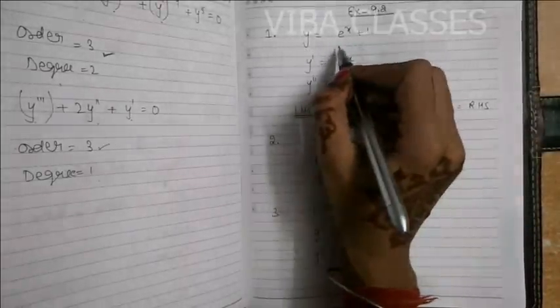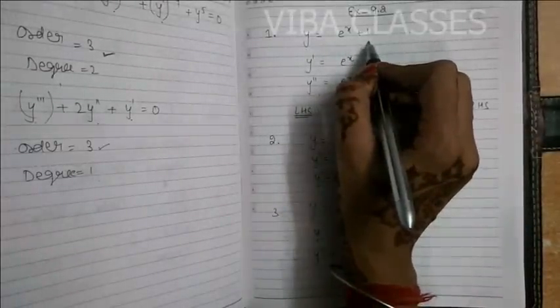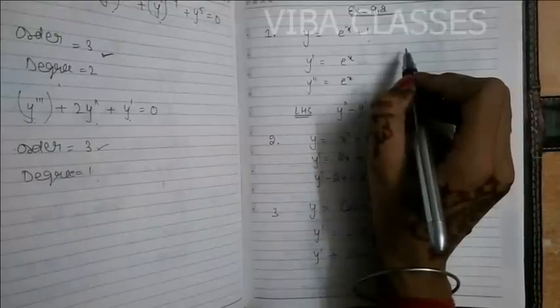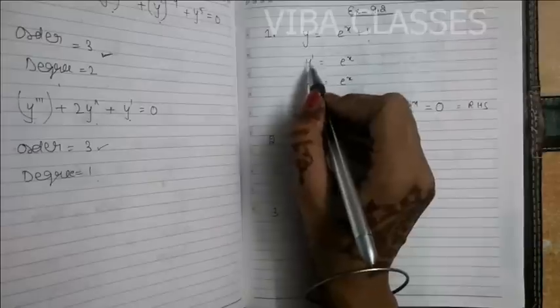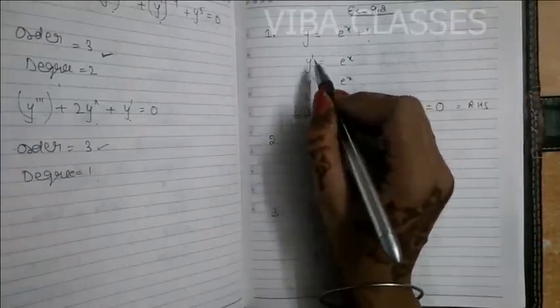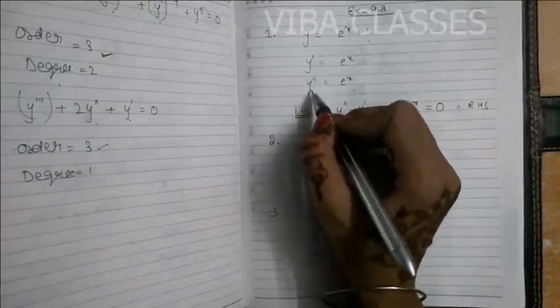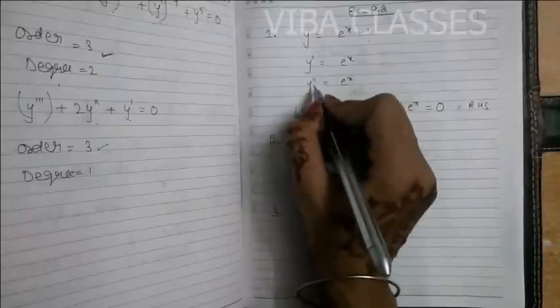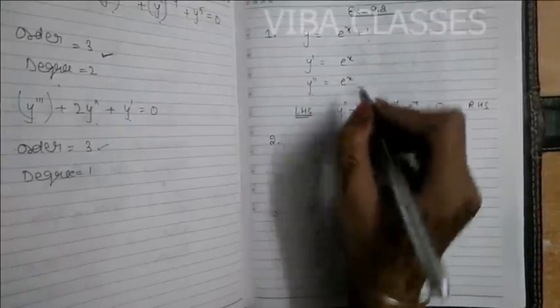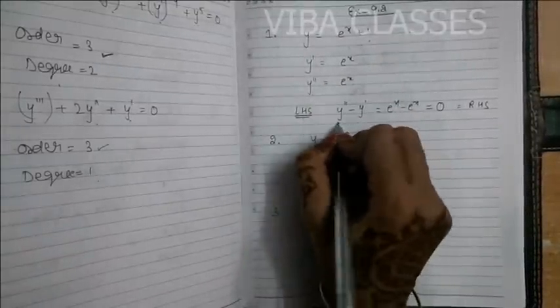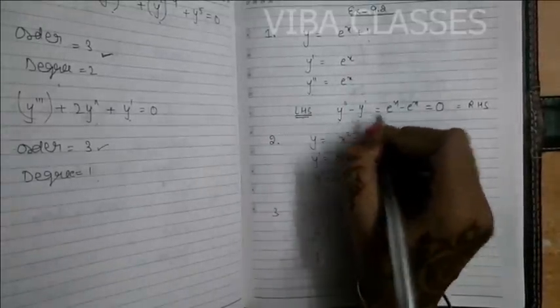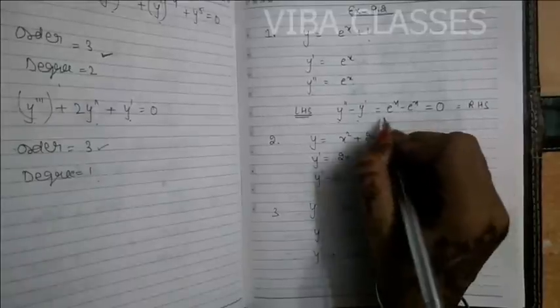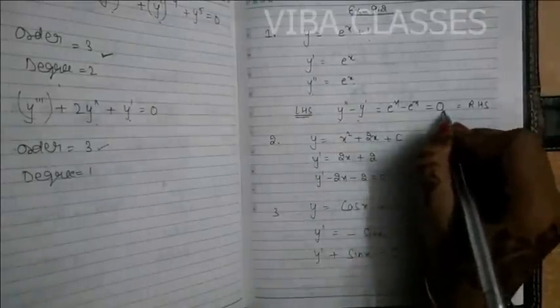You have the question: y = e^x + 1, which you have to prove satisfies the given differential equation. Take the first order derivative: y' = e^x. Then take the second derivative: y'' = e^x. The left hand side is y'' − y'. Substituting: e^x − e^x = 0, which matches the right hand side. So you can solve exercise 9.2 questions by substituting y, y', y'' into the given differential equation and verifying both sides match.